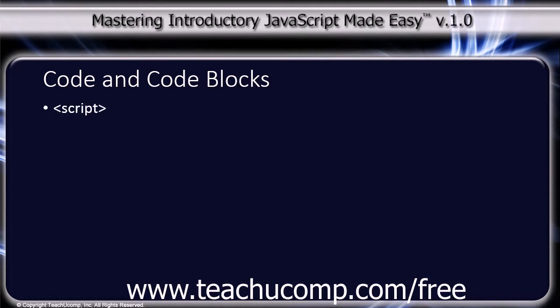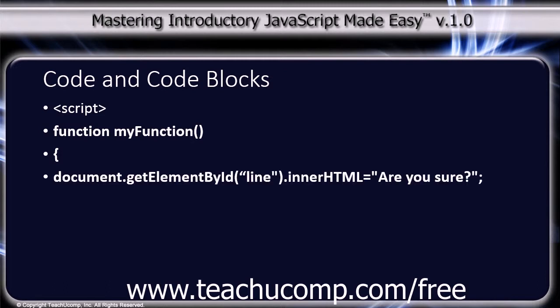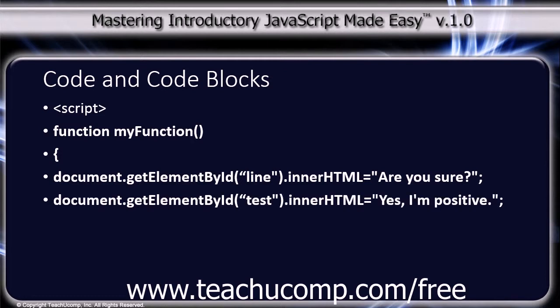The code starts with the open script tag, followed by 'function myFunction()' with open and close parentheses to indicate the start of a function. Inside the opening curly bracket, the first line of code is: document.getElementById('line').innerHTML = 'Are you sure?'; The second line is: document.getElementById('test').innerHTML = 'Yes, I'm positive.' Followed by the closing curly bracket and the closing script tag.